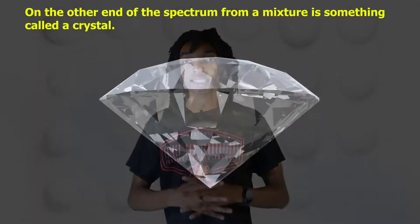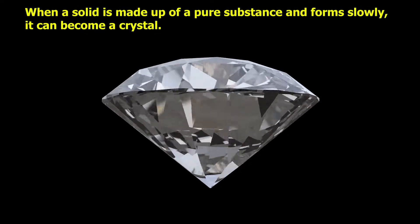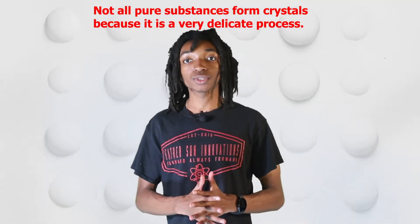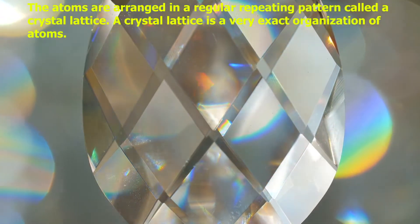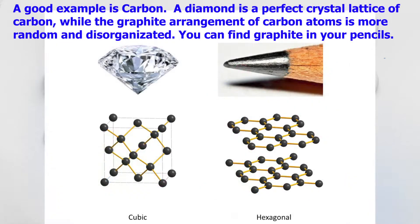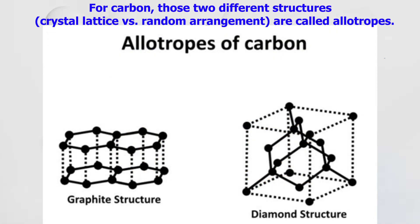This is important because there are different concentrations of specific particles in different parts of the rock. On the other end of the spectrum from a mixture is something called a crystal. When a solid is made up of a pure substance and forms slowly, it can become a crystal. The atoms are arranged in a regularly repeating pattern called a crystal lattice. A good example is carbon — a diamond is a perfect crystal lattice of carbon, while graphite is a more random, disorganized arrangement. Those two different structures — crystal lattice versus random arrangement — are called allotropes. You can find graphite in your pencils.